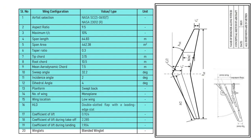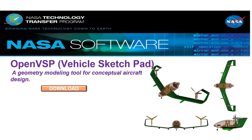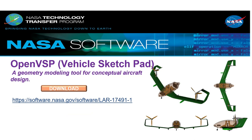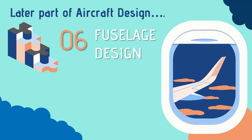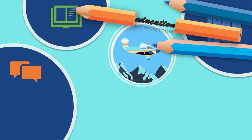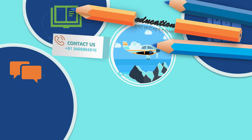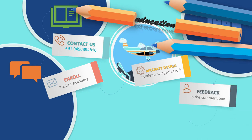Finally, compile all the chosen and optimized wing parameters for your aircraft and proceed to sketch the model using open-source software such as VSP (Vehicle Sketch Pad), which is a downloadable tool for various design configurations. In the later part of the aircraft design course, you will study fuselage design. Hope you are enjoying this course and finding it informative. We'd love to hear your feedback. See you in the next module — thank you for watching, take care, and stay blessed.